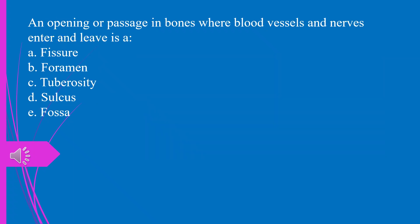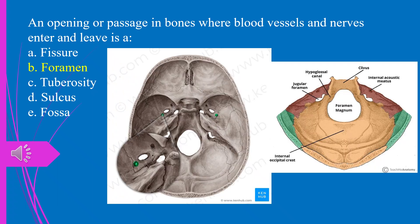An opening or passage in bones where blood vessels and nerves enter and leave is, A. Fissure. B. Foramen. C. Tuberosity. D. Sulcus. E. Fossa. The answer is B. Foramen.